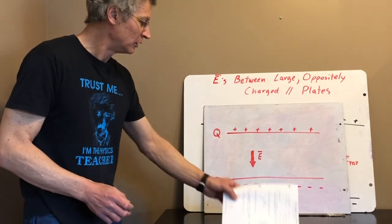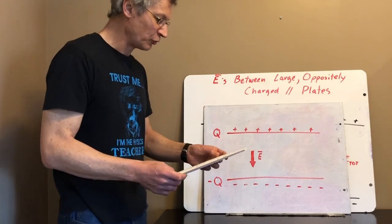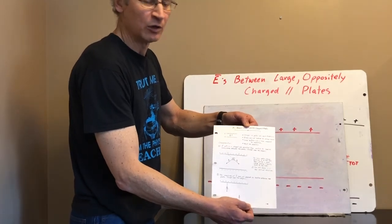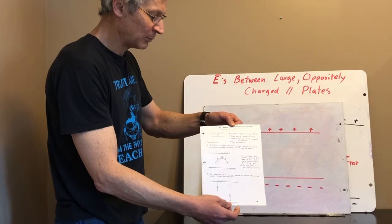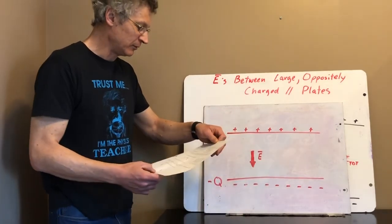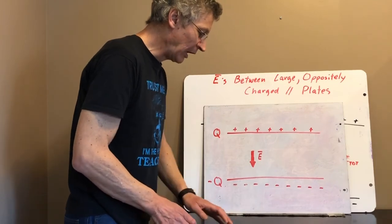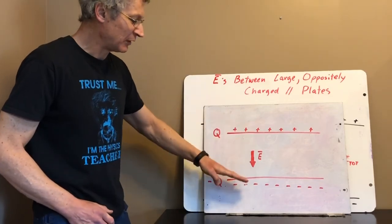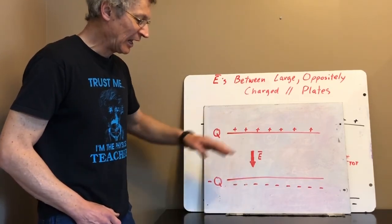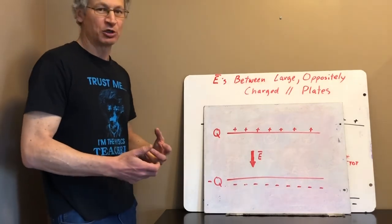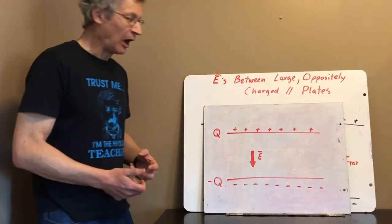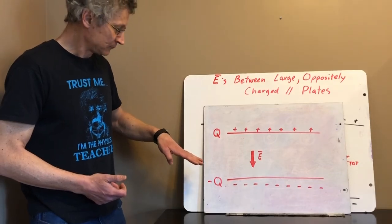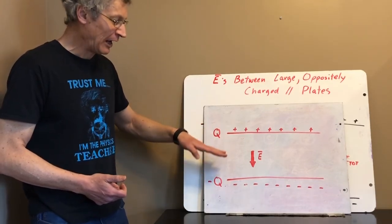For this video we're going to follow along a handout — the PDF version is posted — and go over each point in a little more detail. Right at the top of the page there is a typical set of large oppositely charged parallel plates. When we discuss them, we're going to assume that the charges on them are equal and opposite.